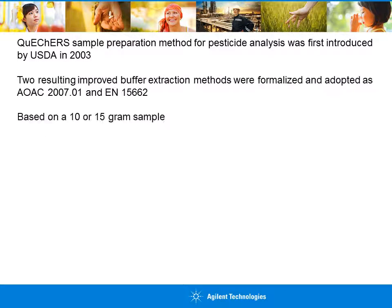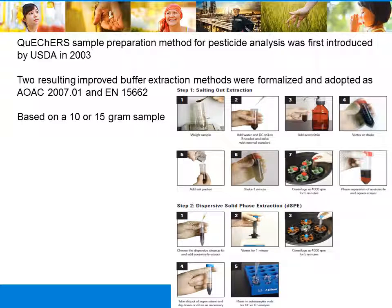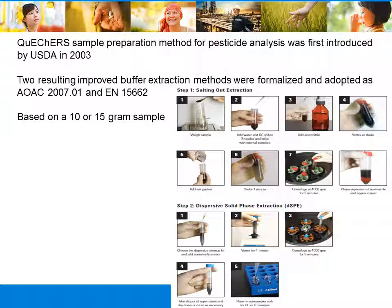The QuEChERS method is based on either a 10- or 15-gram sample, which has been determined to exemplify representative sampling. The steps are: weigh homogenized sample into a disposable polypropylene centrifuge tube; add two ceramic homogenizers, which are weighted ceramic grinding agents that help facilitate the extraction partitioning; add spiked analytes if needed and internal standard; add acetonitrile and vortex for a minute; add the QuEChERS salts from the salt packets and shake vigorously for at least one minute.